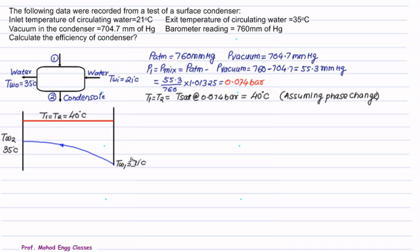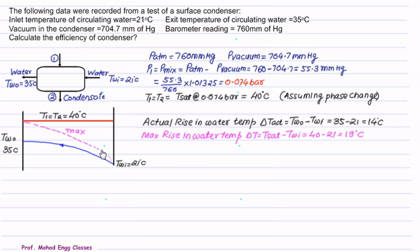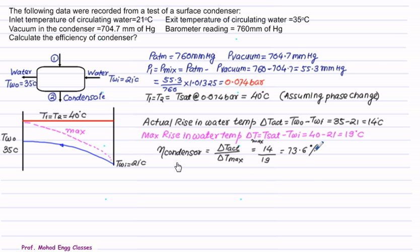Water enters at 21°C and leaves at 35°C. The actual rise in water temperature is ΔT_actual = TWO − TWI = 35 − 21 = 14°C. The maximum possible rise is ΔT_max = T_sat − TWI = 40 − 21 = 19°C. Condenser efficiency is defined as actual rise divided by maximum possible rise: 14/19 = 73.6 percent.